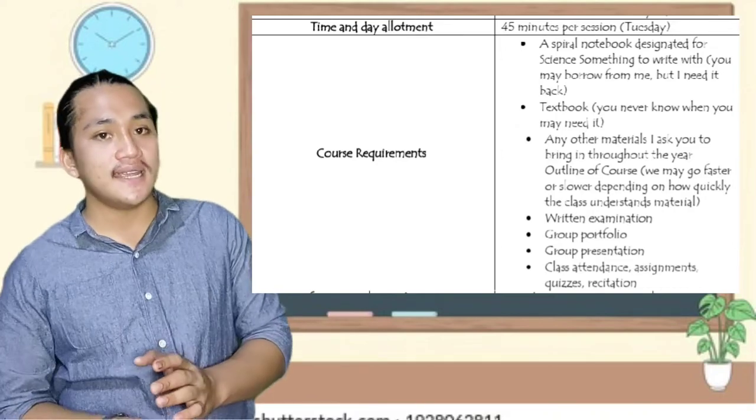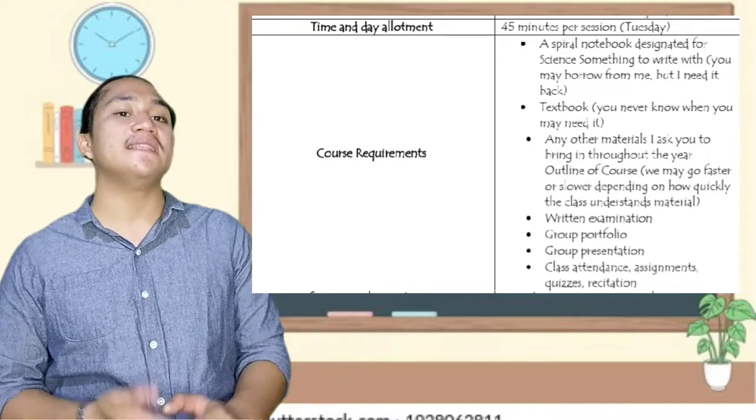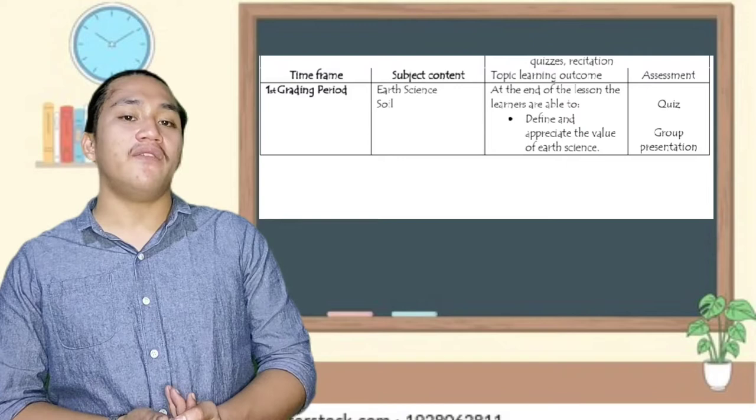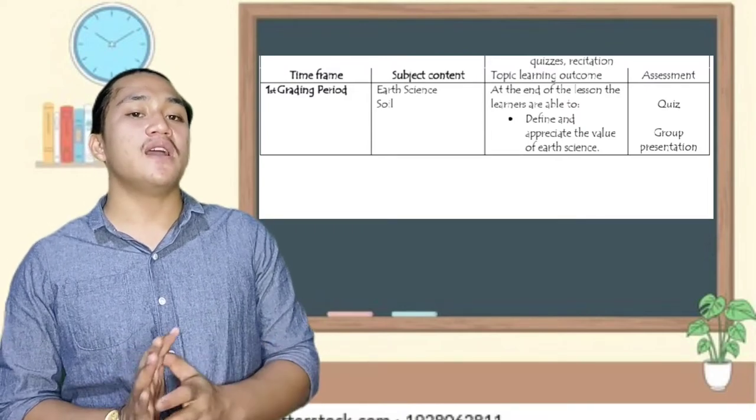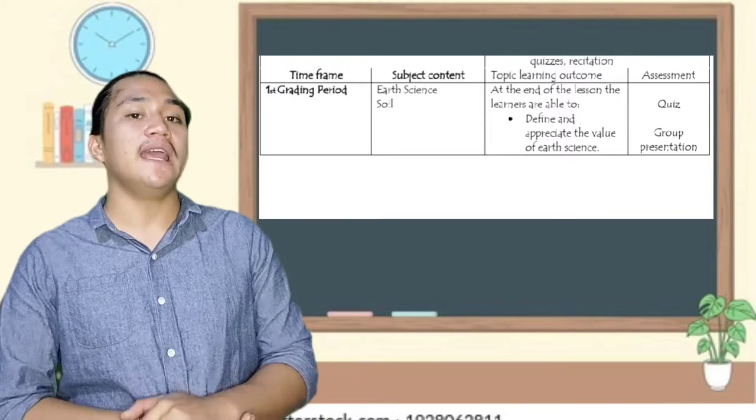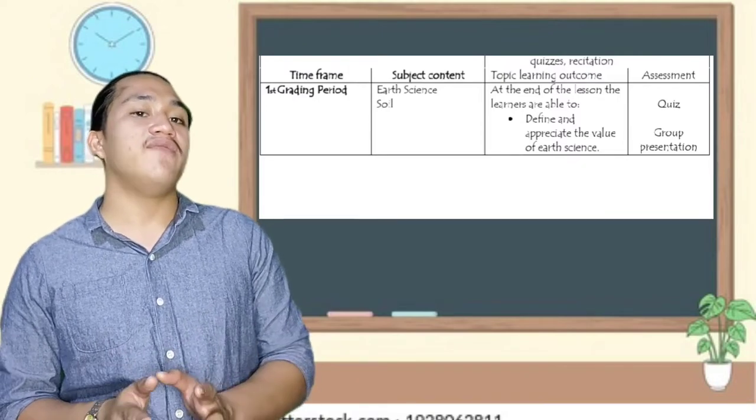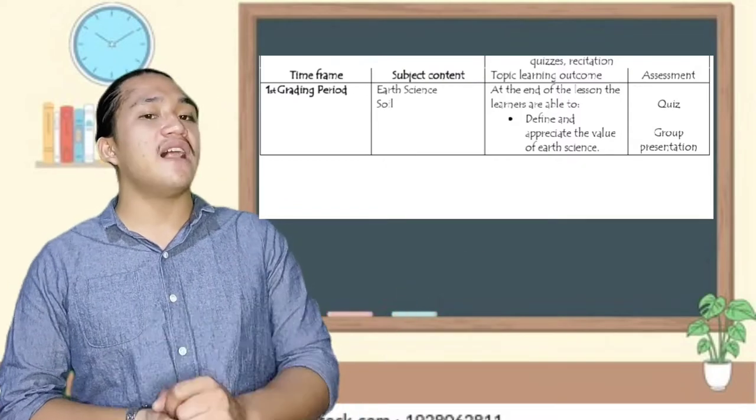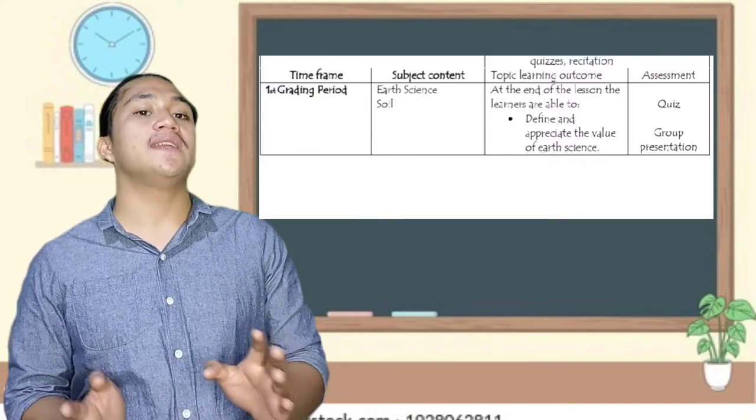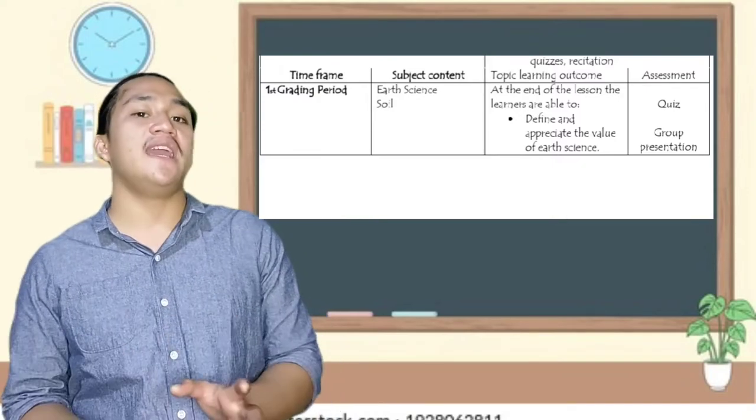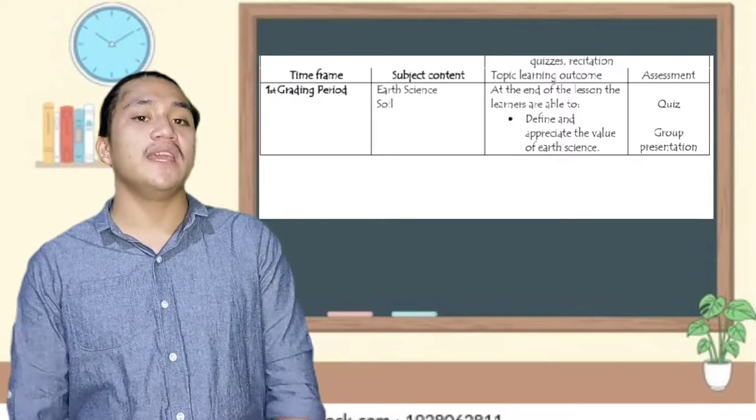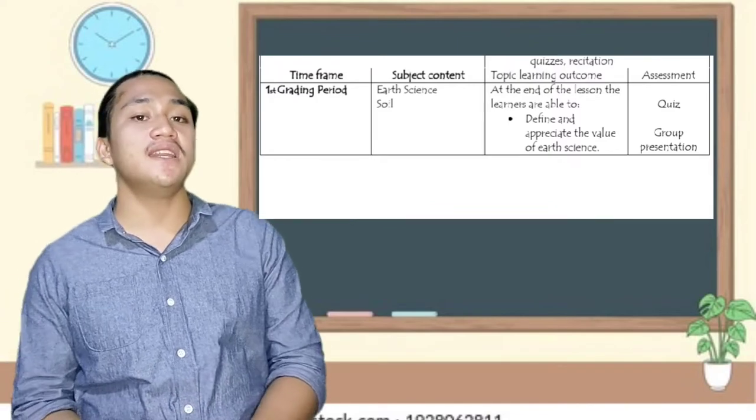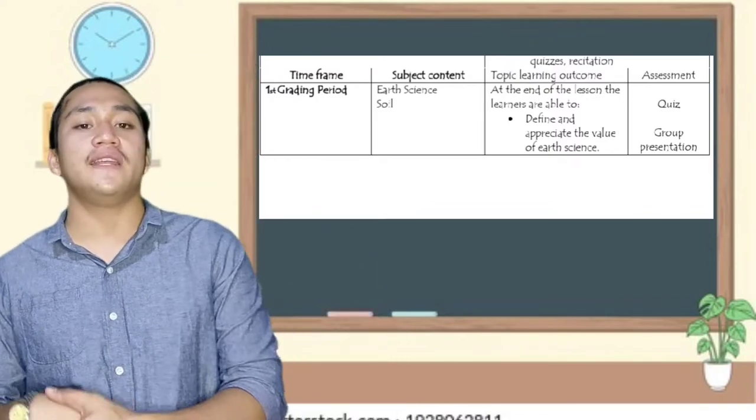Assignments, quizzes, and recitations. Time frame for the first grading period, the subject content is earth science and soil. With the topic learning outcome, at the end of the lesson, the learners are able to define and appreciate the value of earth science and also understand the types of soil and create a miniature of soil.